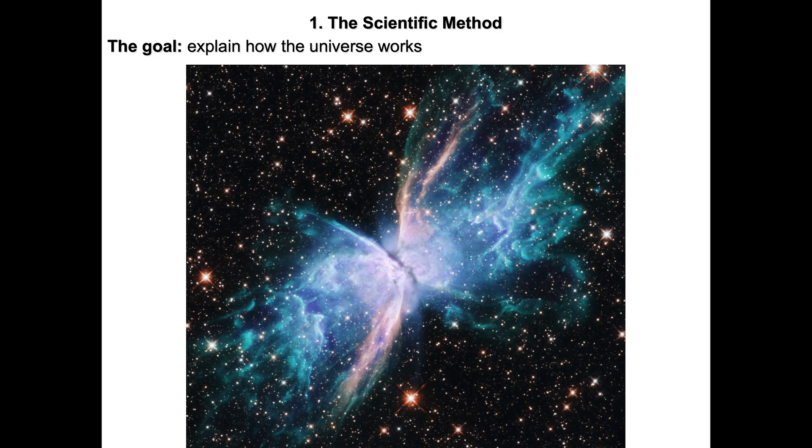The goal of the scientific method in this example is to explain how the universe works — that's ultimately the ultimate goal. If you understand the universe, you're going to understand everything in it. We start with observation and experimentation: we see something, we feel something, we notice something — we describe that as an observation. In order to make sense of that observation, we may do experiments, which may include watching for that thing to happen again, or experimenting to generate that thing in a controlled environment.